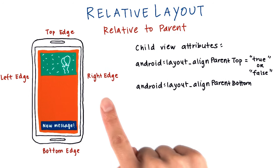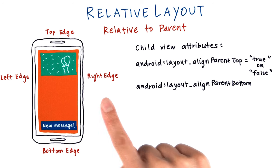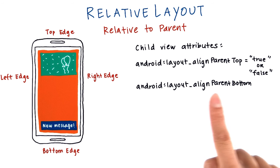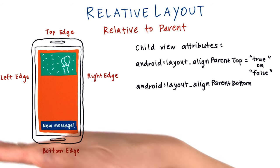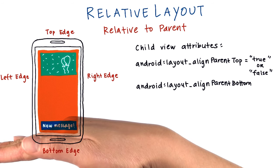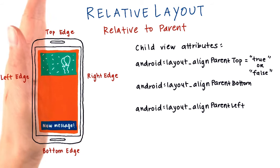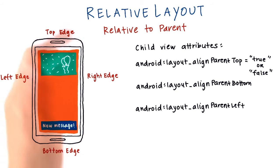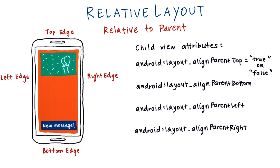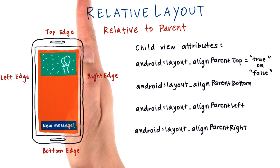There are attributes for all the other edges as well. For example, alignParentBottom for aligning to the parent's bottom edge. There's alignParentLeft for aligning to the parent's left edge, and then there's alignParentRight for aligning to the parent's right edge.